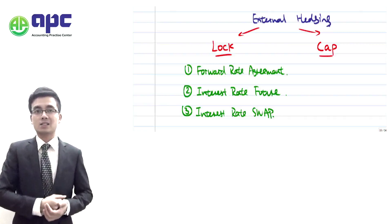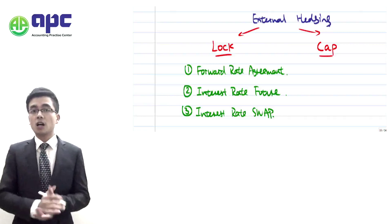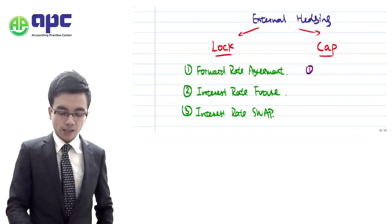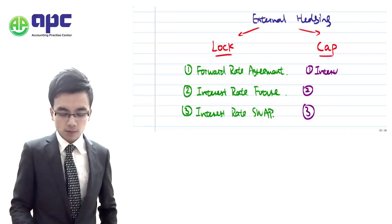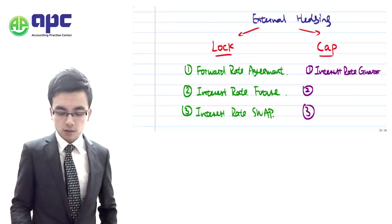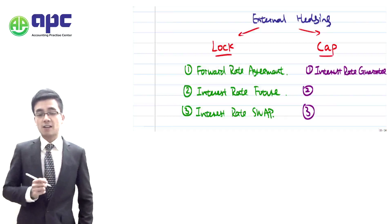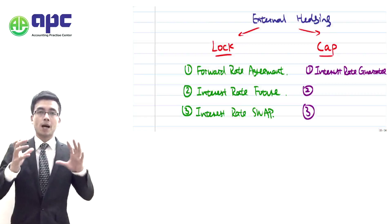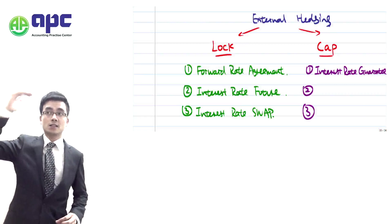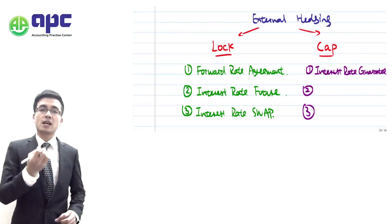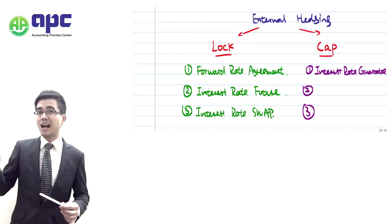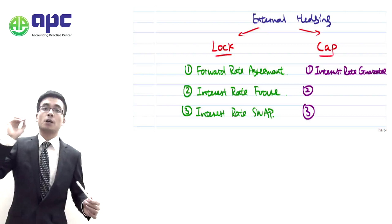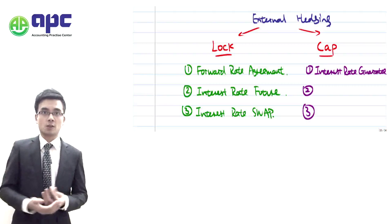With regards to capping the rate, there are three ways. First, we can use the interest rate guarantee, which means we pay a maximum interest expense set by the contract — for example, a maximum of 5%. So even if the interest rate rises to 11%, you still only pay 5%, which is the capped maximum.